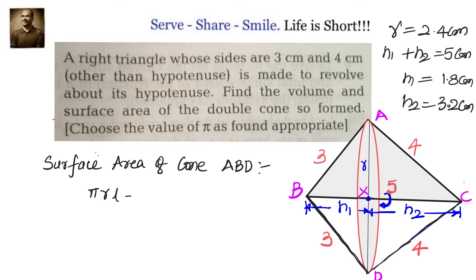First let us calculate surface area of the cone ABD. For that we have π × r × l. So 22/7 × radius is 2.4 × slant height is 3. Simplify that we will get 158.4 ÷ 7 which comes around 22.63 approximately cm².